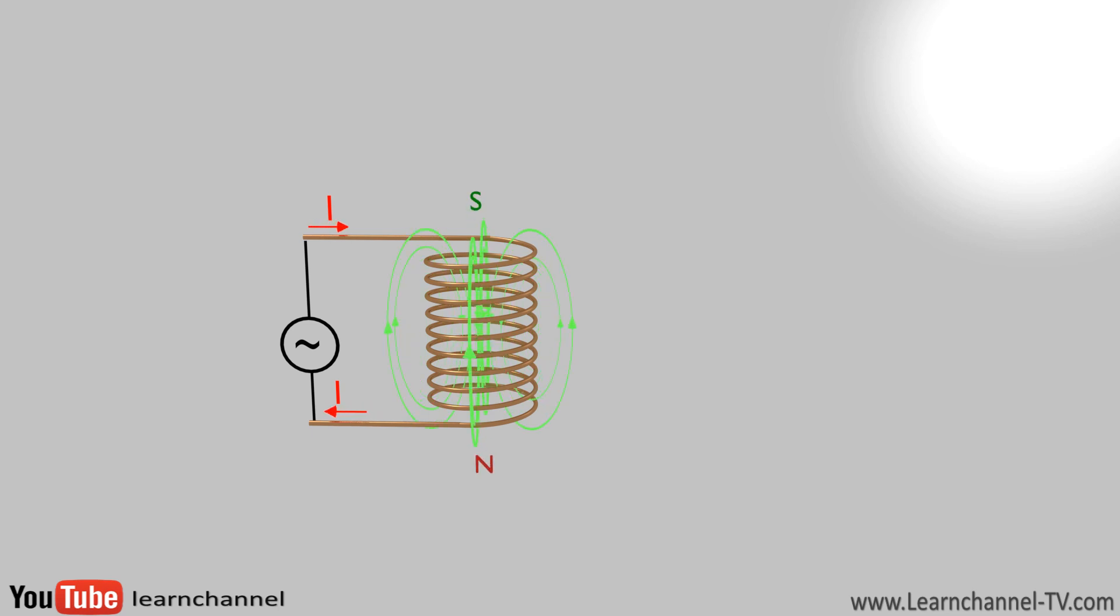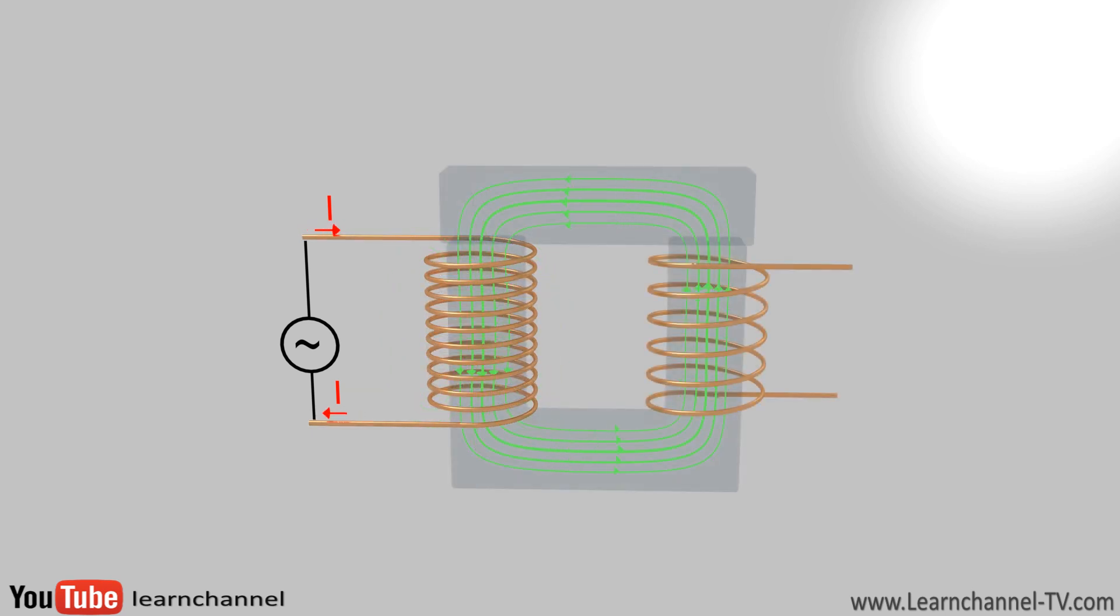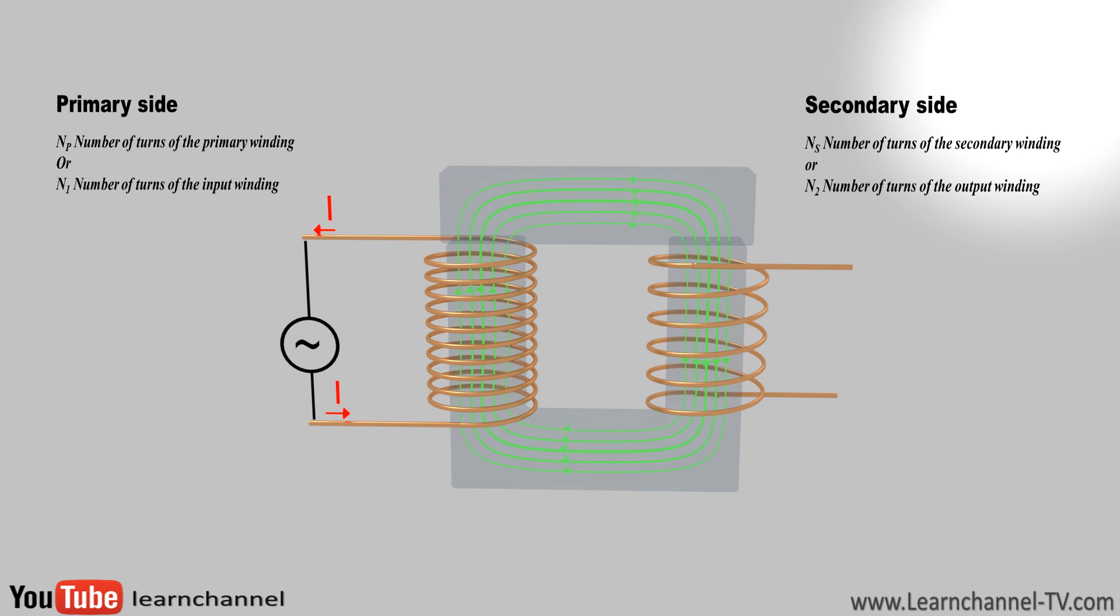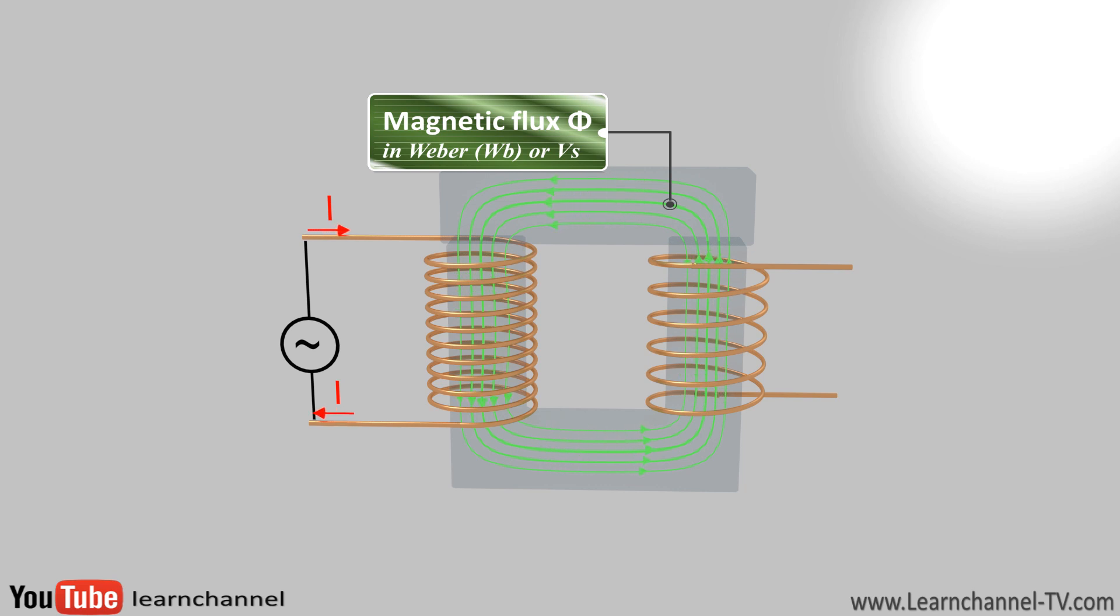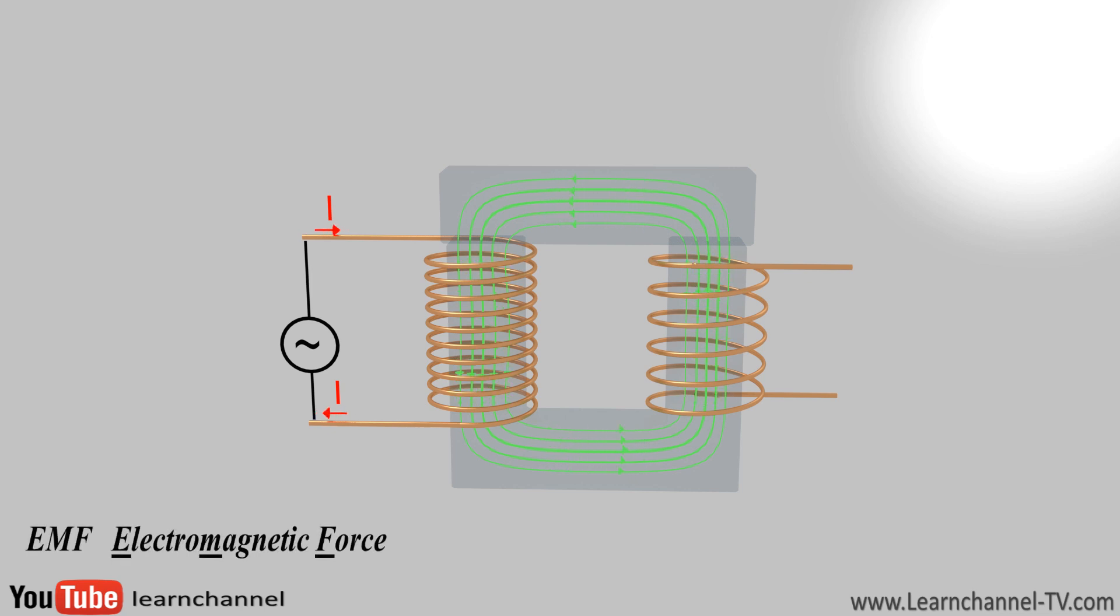This alternating electromagnetic field can induce an alternating voltage in the secondary coil. But for this, the secondary coil must be electromagnetically coupled to the primary winding. And this is where the soft iron core comes into play. The soft iron core conducts the magnetic field lines very well. Since the same magnetic flux is passing through the primary and secondary windings, the electromagnetic force, in short EMF, created in the primary winding is the same as in the secondary winding.